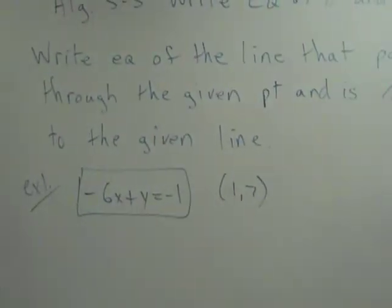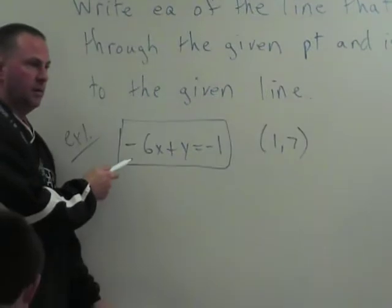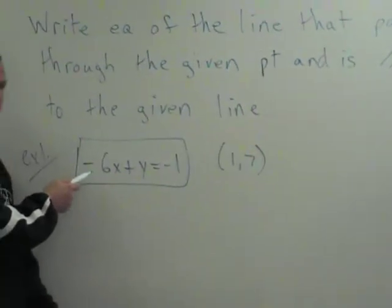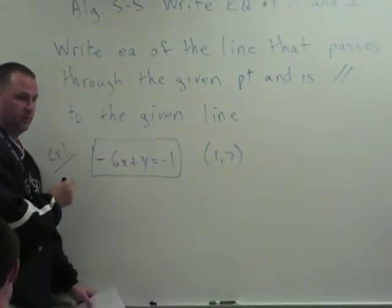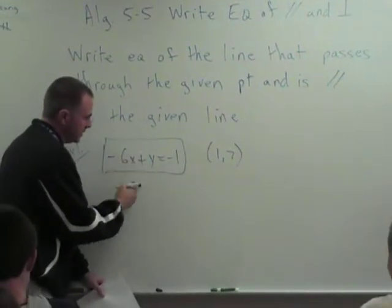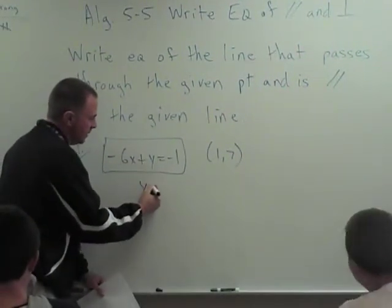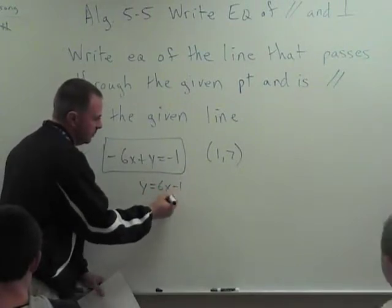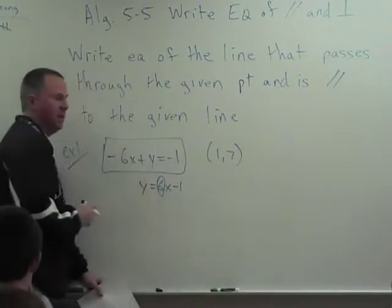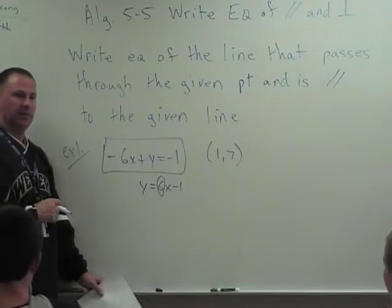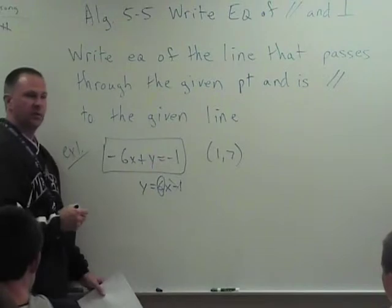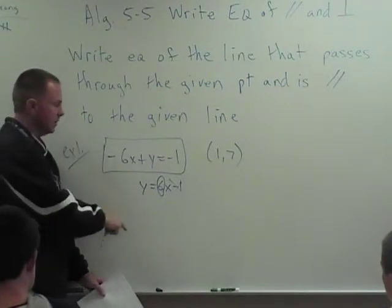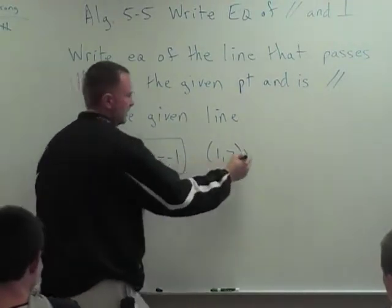Parallel lines have the same slope. So the only reason for having this equation on here is to find the slope. It's 6. So we add 6x to the right and we have y equals 6x minus 1. So this is the only piece out of this equation that I care about. I don't care about this. Don't look at that at all. I want the slope of this line. So the slope of this line is going to be 6.